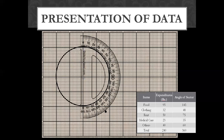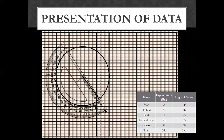We divide the circle into sectors. From the 143-degree line, we do the next sector for clothing with an angle of 48 degrees. We rotate the protractor to the next line, align zero, draw a point at 48 degrees, and draw a line from the center to divide the clothing sector.